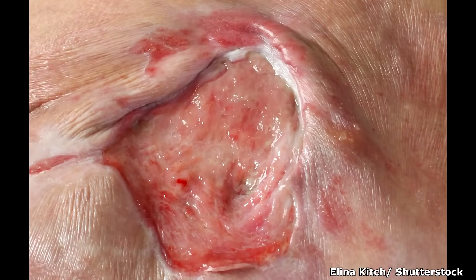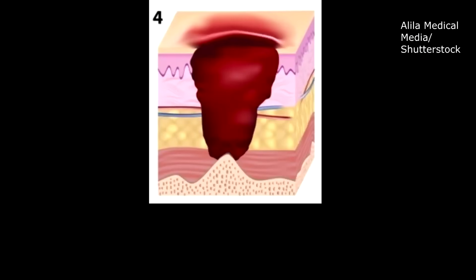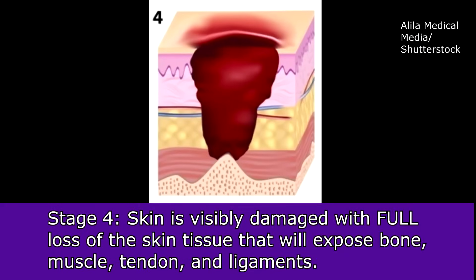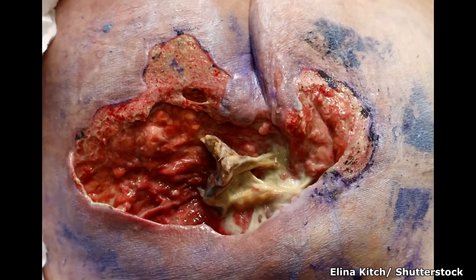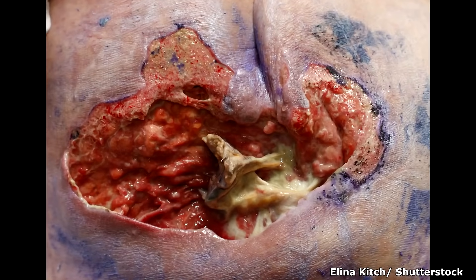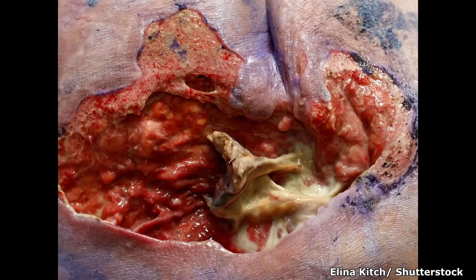One of the most severe stages is stage four. The skin is visibly damaged with full loss of skin tissue, but the distinguishing feature is that it exposes bone, muscle, tendon, and ligaments — you will be able to see these structures. Here is an example of a stage four pressure injury, and as you can see, the bone is very clearly visible in this image.